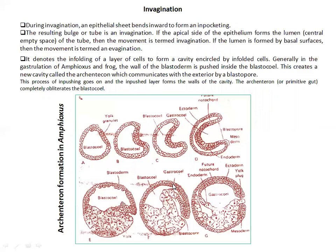Invagination denotes the infolding of a layer of cells to form a cavity encircled by infolded cells. This is generally seen in the gastrulation of amphioxus and frogs.